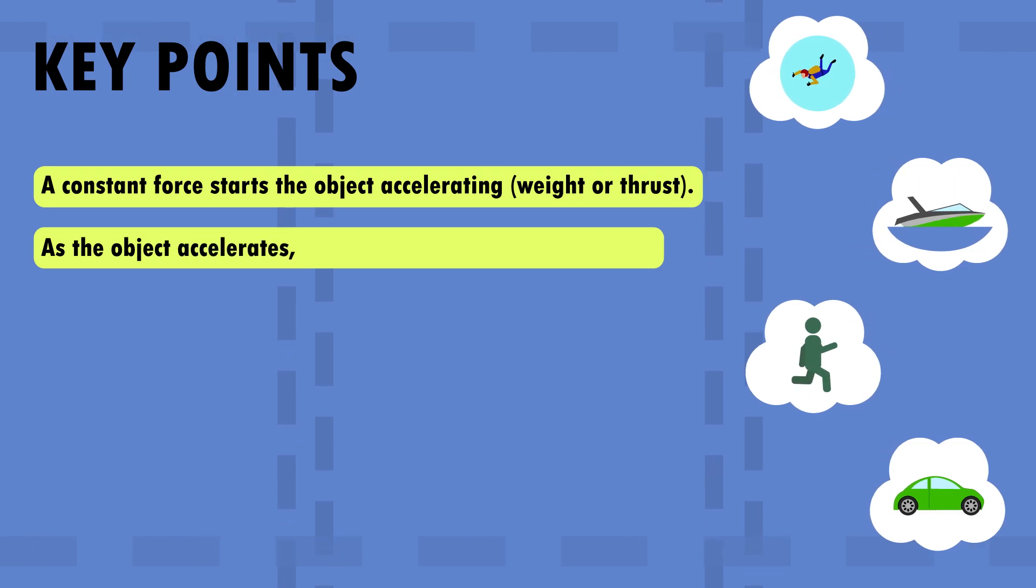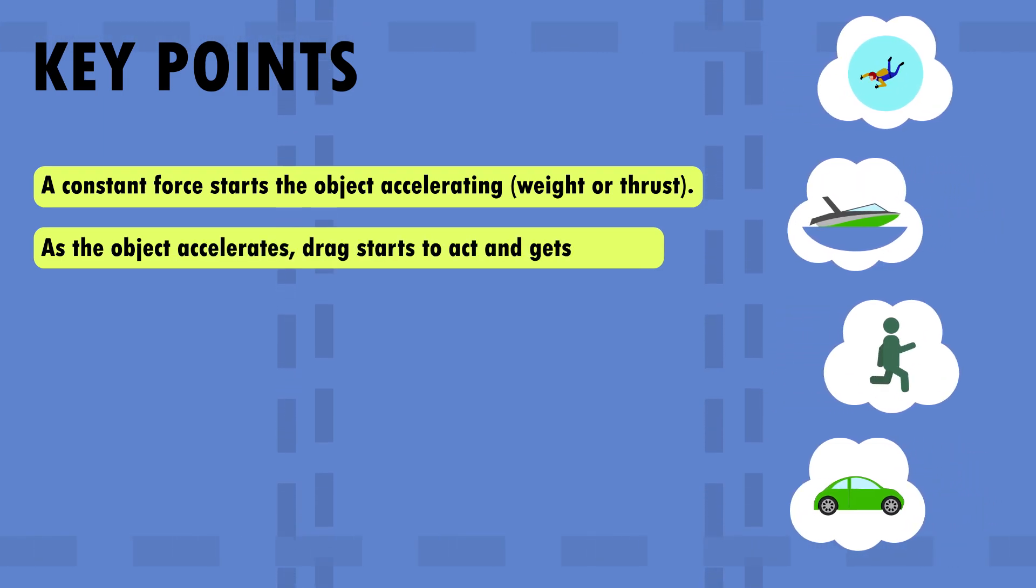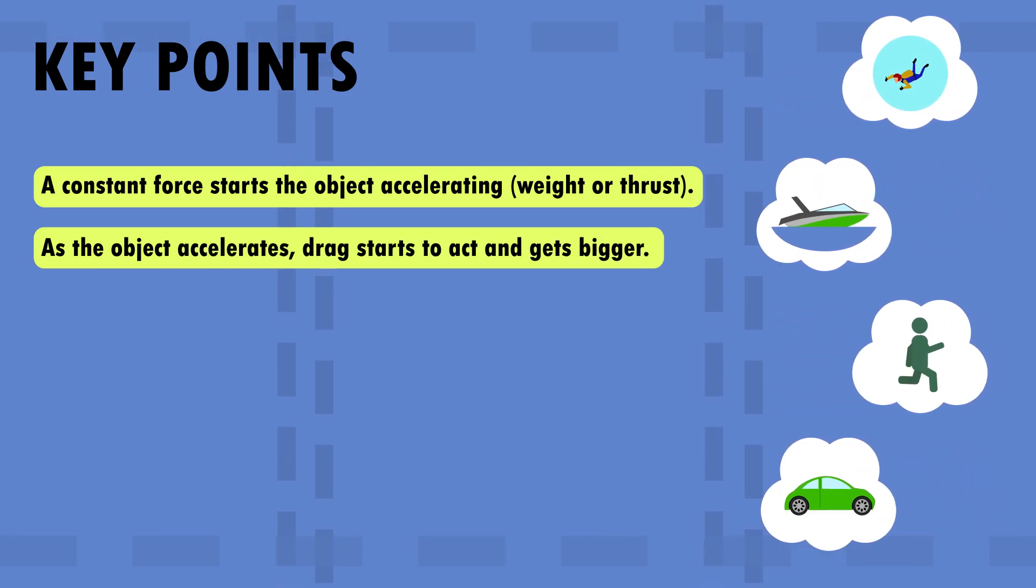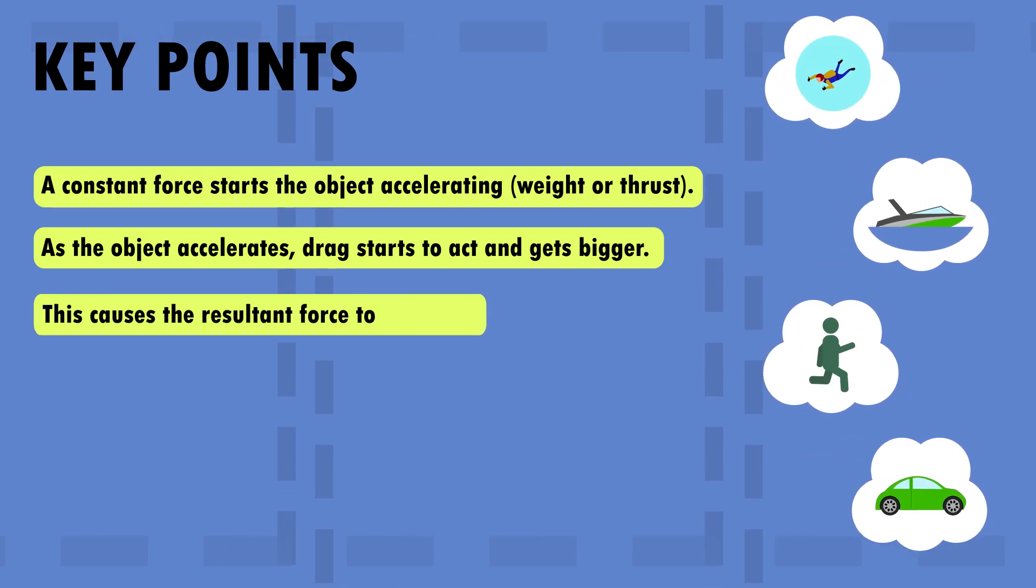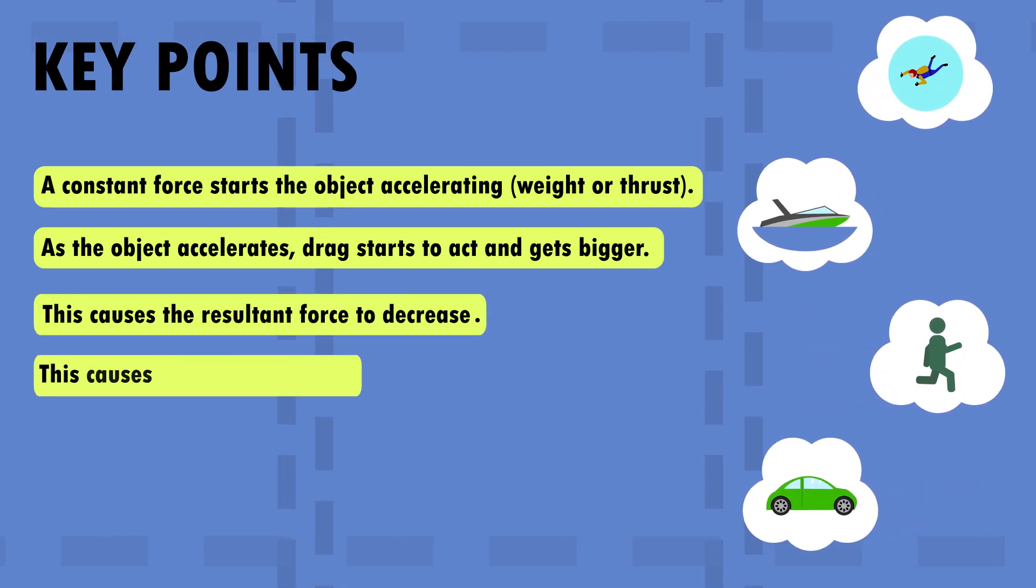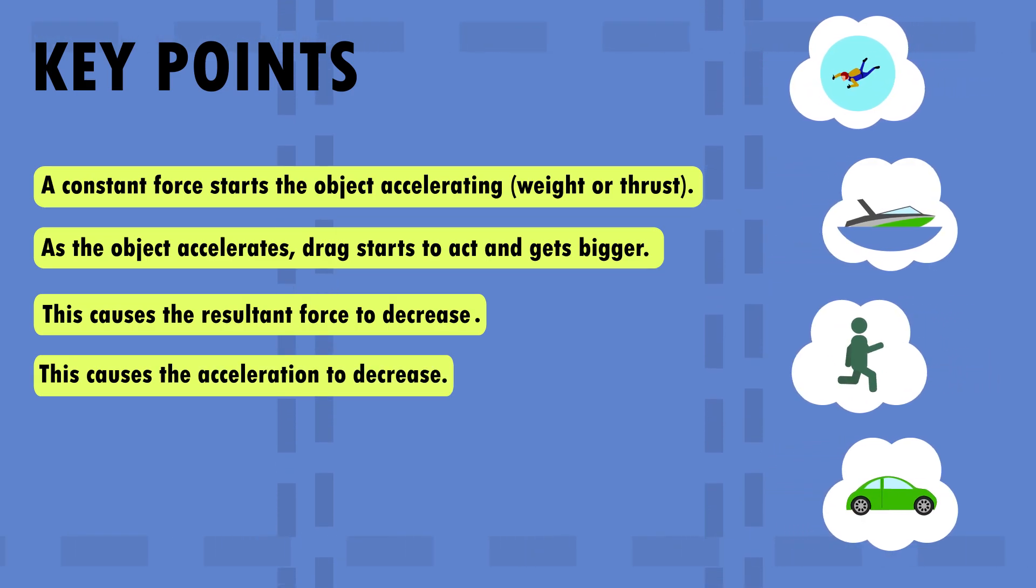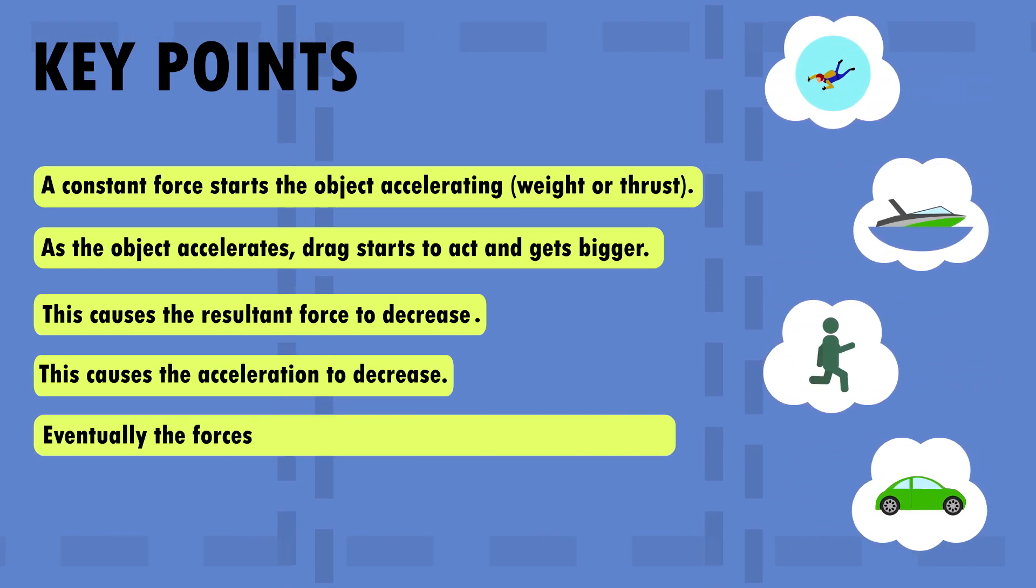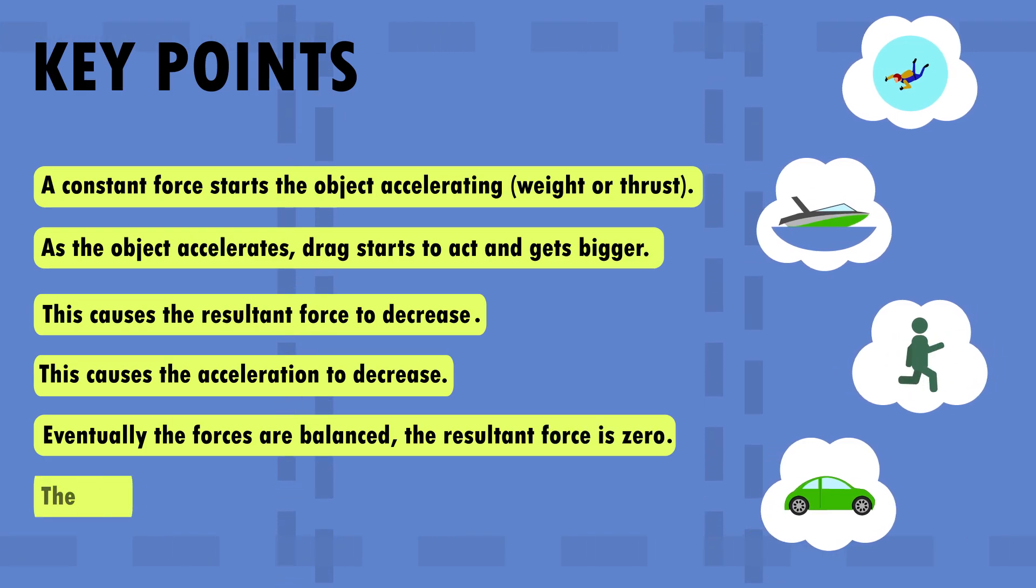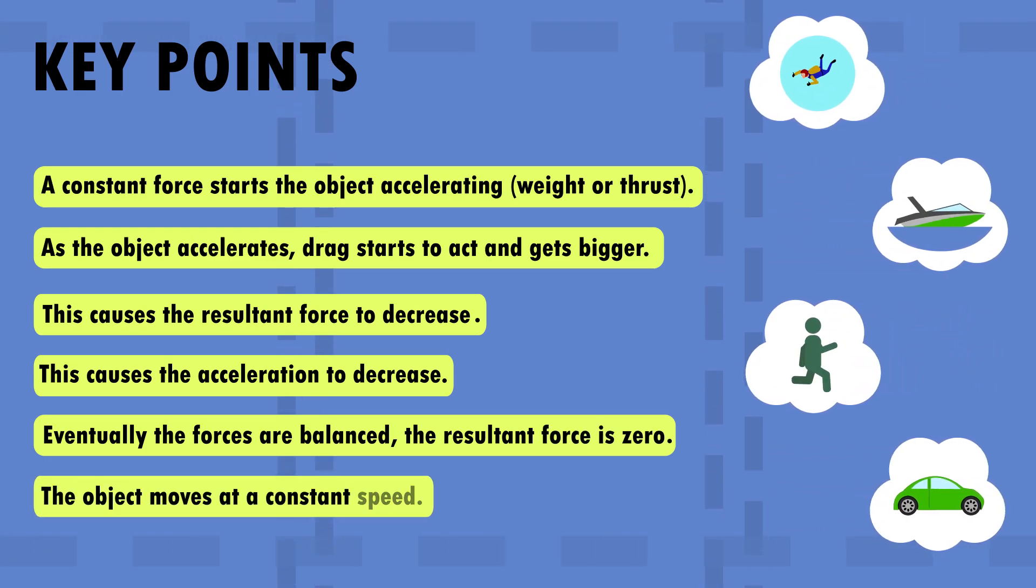As the object accelerates, drag starts to act and gets bigger faster as the object goes faster. This causes the resultant force to decrease and this causes the acceleration to decrease. Eventually the forces are balanced, the resultant force is zero and the object moves at a constant speed.